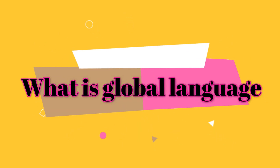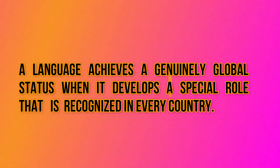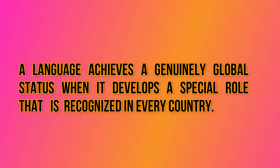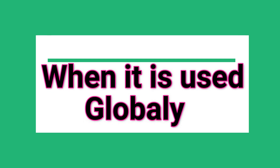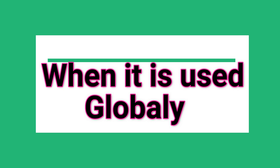What is a global language? A language achieves genuinely global status when it develops a special role that is recognized in every country. A global language is used globally, in almost all the countries of the world. Crystal says that when a language gets a special role for communication in the countries of the world, it becomes a global language. This special role is one where all people adopt this one language for the special purpose of communicating globally.